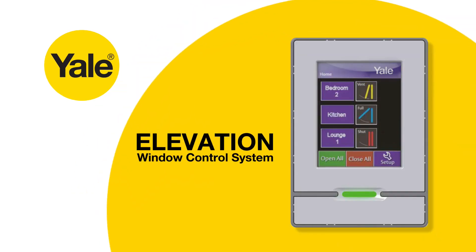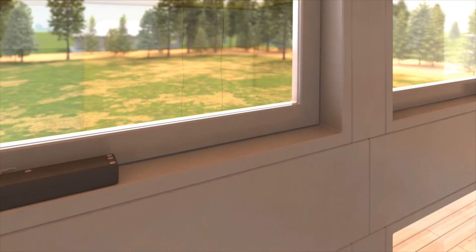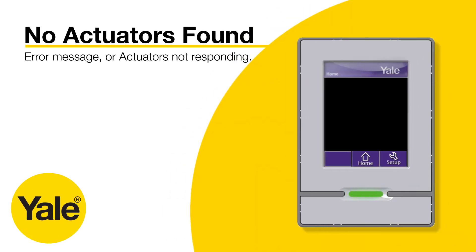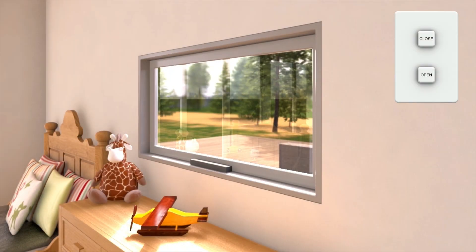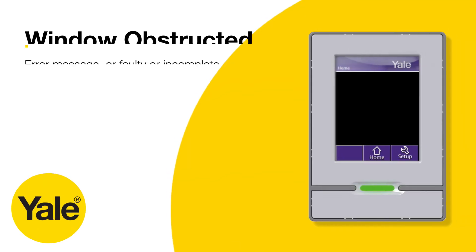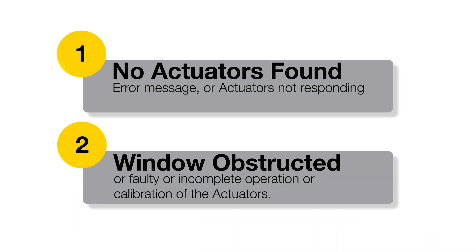Hi there. If you've hit a snag in the process of wiring up the Elevation Window Actuator system, we're here to help. In this video, we'll troubleshoot some of the common issues you could come across and how to resolve them. We'll cover common mistakes that can cause the keypad to display a No Actuators Found error message, or if the actuators are just not responding to an open signal from a wall switch or smart home system. Next, we'll cover some causes of the window-obstructed error message on the keypad, or of faulty operation of the actuators during opening or calibration. Let's get started.